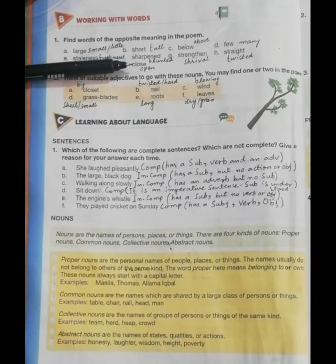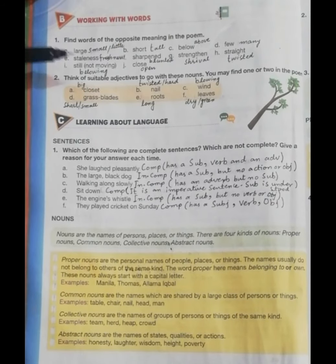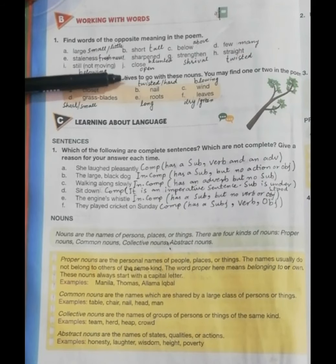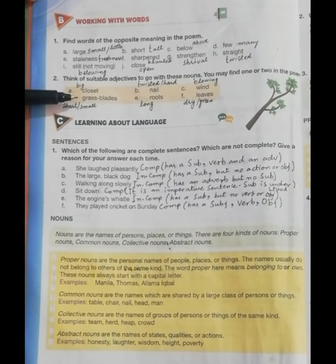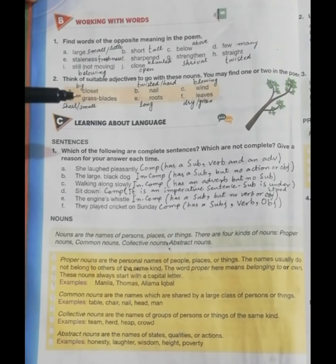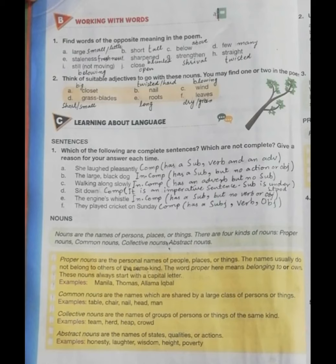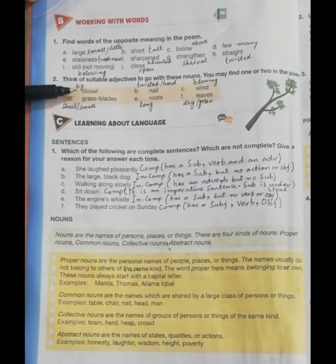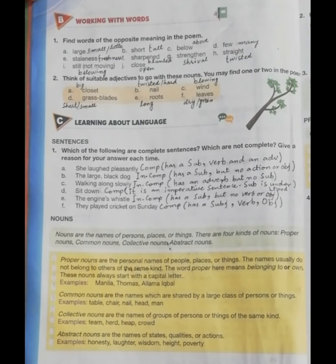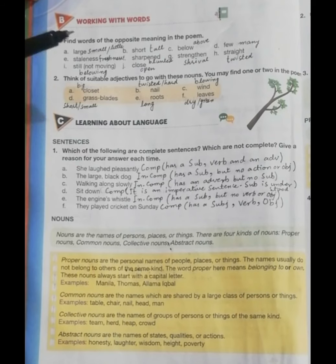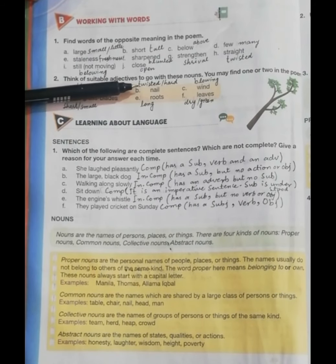The next question is: think of suitable adjectives to go with these nouns. We have been given nouns and we are going to find adjectives of our choice — you may find one or two in the poem also. The first word is 'closet,' and suitable adjectives can be 'big' or 'small.' The second word is 'nail,' and the adjective could be 'twisted' or 'hard.'